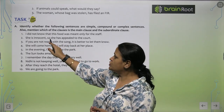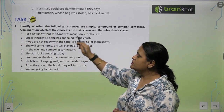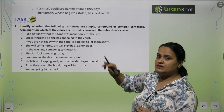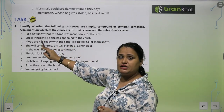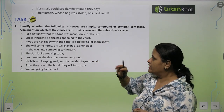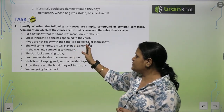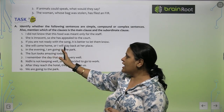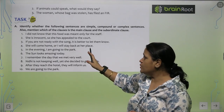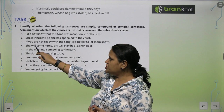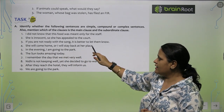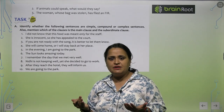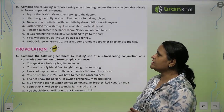'She is innocent, so she has appealed to the court.' The conjunction 'so' joins two independent clauses, making this a compound sentence. 'If you are not ready with the song, it is better to let them know' — this is a complex sentence. 'She will come home or I will stay back at her place' — this is a compound sentence. 'The sun looks amazing today' — this is a simple sentence, because it has only one clause.